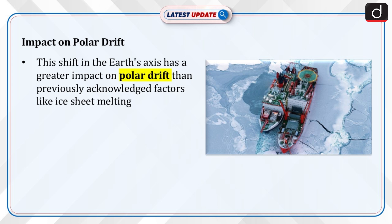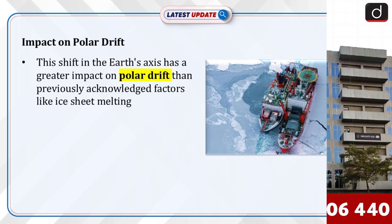The shift in Earth's axis is having a greater impact on polar drift than previously acknowledged climate factors like ice sheet melting.